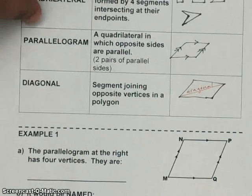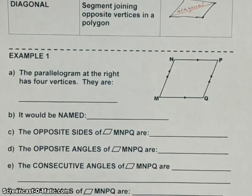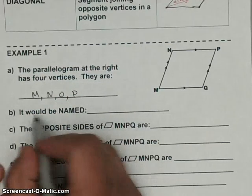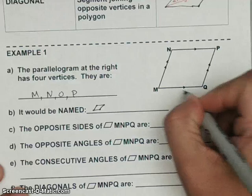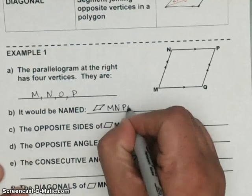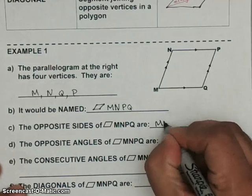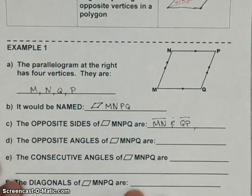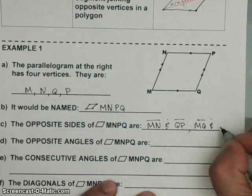Now we're going to look at an example of a parallelogram. A parallelogram has four vertices: points M, N, O, and P. When naming a parallelogram, we draw it and go around the sides of the shape, typically in alphabetical order — so M, N, P, Q. The opposite sides of parallelogram MNPQ are going to be segment MN and segment QP — that would be one pair of sides. The other pair would be MQ and NP.